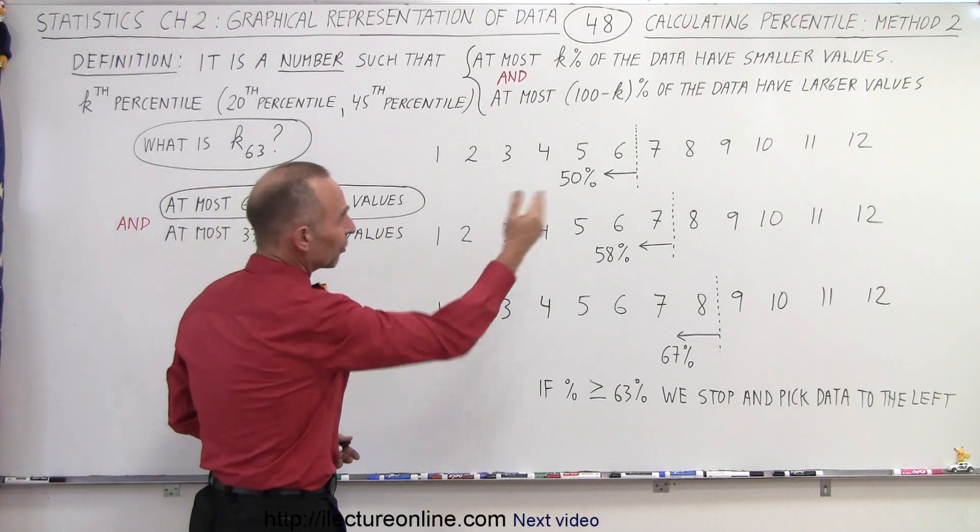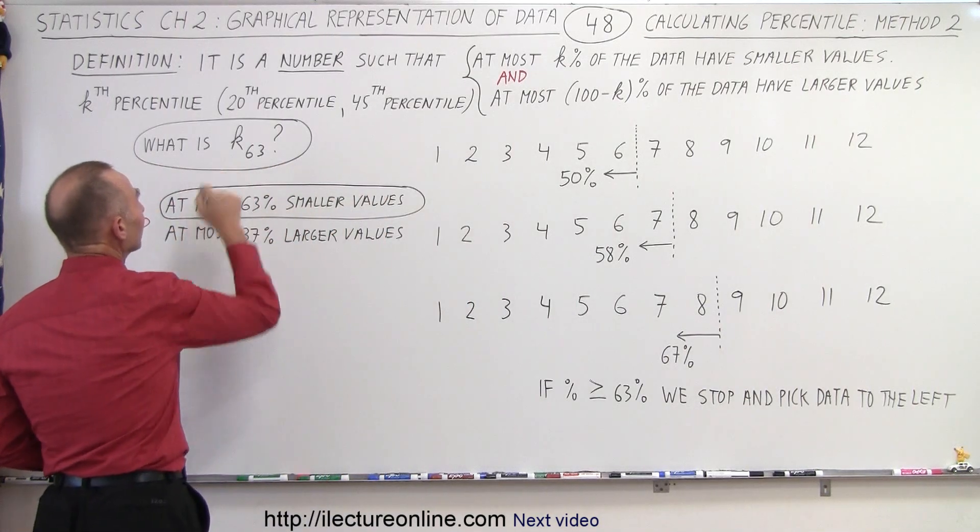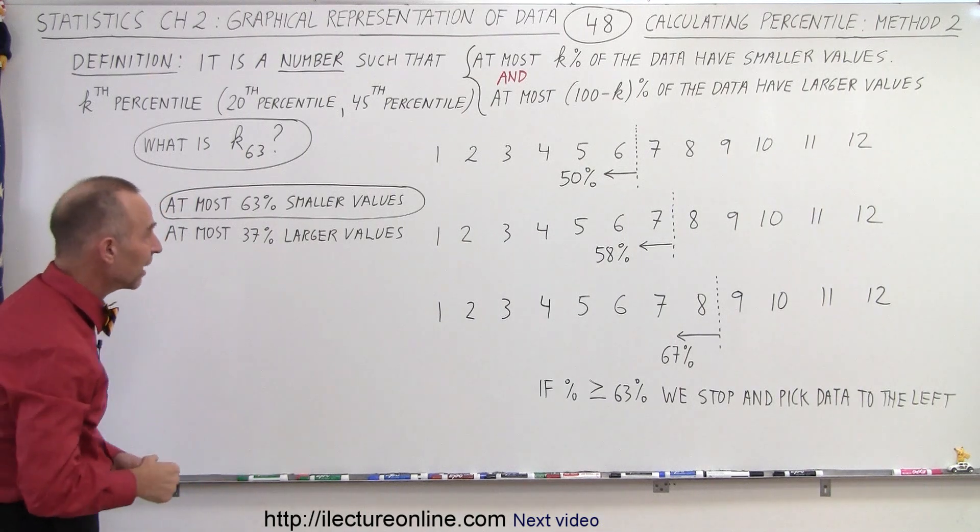We'll use the same data set of the 12 numbers, and we're looking for k63, or the 63rd percentile of the data.